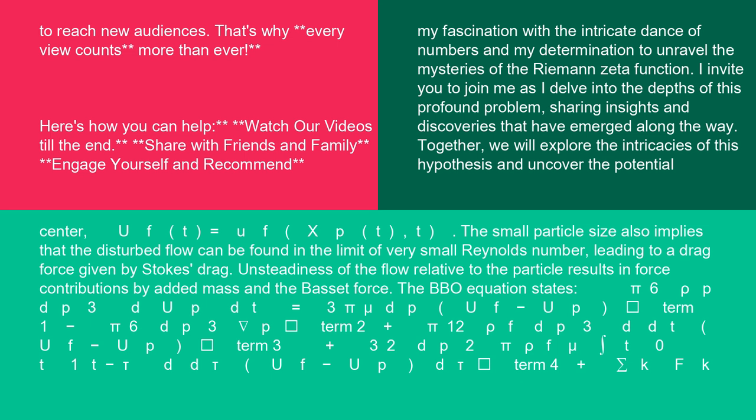The BBO equation states: (π/6)ρp dp³ dup/dt = 3πμdp(uf - up) [term 1] - (π/6)dp³∇p [term 2] + (π/12)ρf dp³ d/dt(uf - up) [term 3] + (3/2)dp² √(πρfμ) ∫₀ᵗ 1/√(t-τ) d/dτ(uf - up) dτ [term 4] + Σₖ fₖ [term 5].